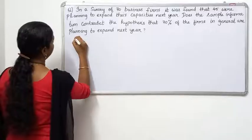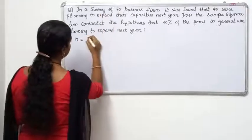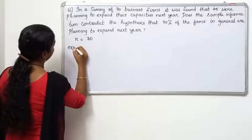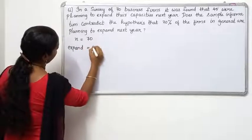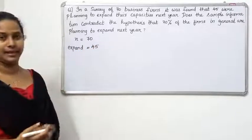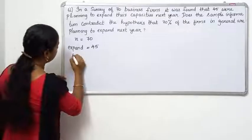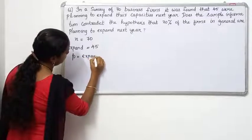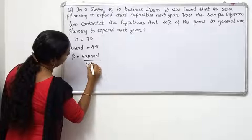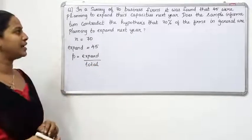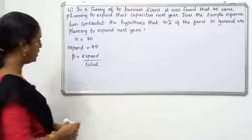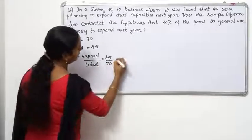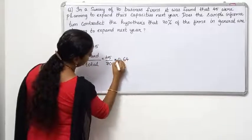We survey 70 business firms, so the total N is 70. The number of firms planning to expand — that is the property — is 45. The sample proportion small p equals the number of firms planning to expand divided by the total number of firms: 45 by 70.